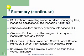OS functions include: providing the user interface, managing files, managing applications, and managing hardware. The Windows desktop is the primary graphical interface to the OS. Windows Explorer is used to navigate directories and manipulate files and folders. Other important tools include System Properties, Control Panel, Device Manager, System Information, and Windows Help. Keystroke shortcuts provide a way to perform tasks without the use of a mouse, and can be very helpful when the mouse isn't working.